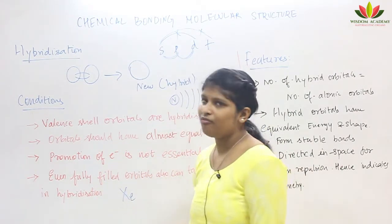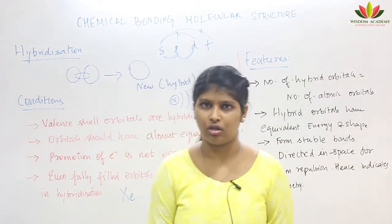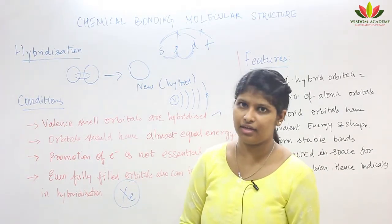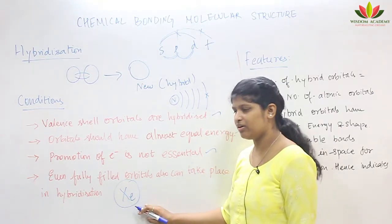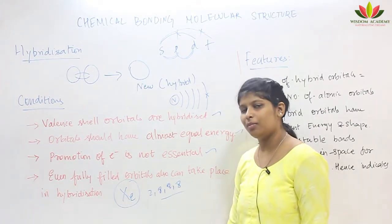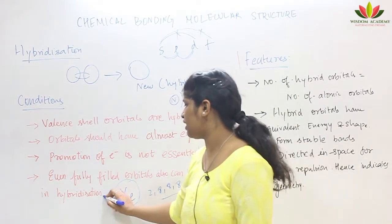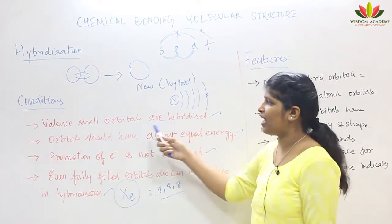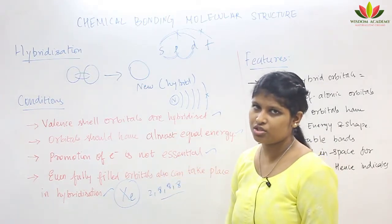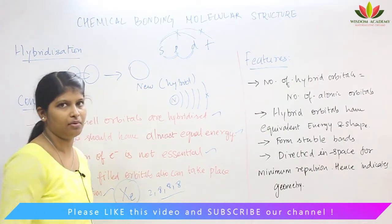For example, xenon — we know fully filled is highly stable and usually won't react with other molecules. But xenon is quite reactive at drastic conditions, even though it is fully filled. So sometimes fully filled orbitals also participate. To summarize the conditions: valence shell orbitals only should participate; energy should be almost equal; promotion of electron is not essential; and sometimes fully filled orbitals also participate.